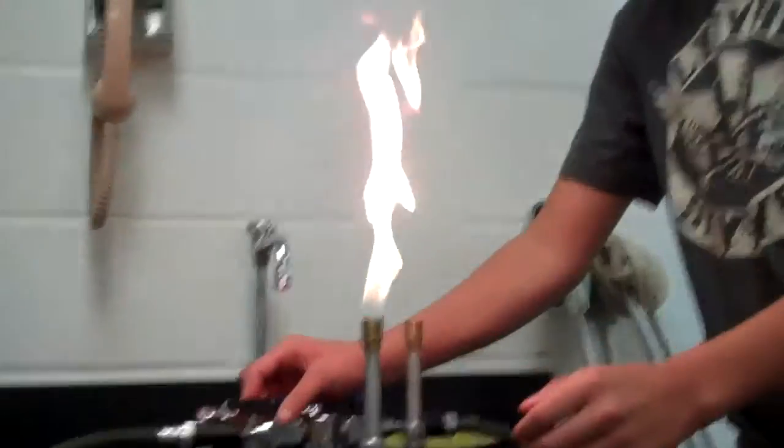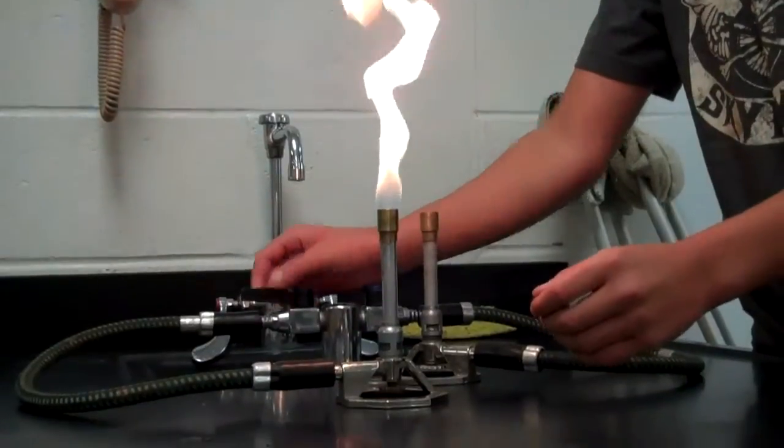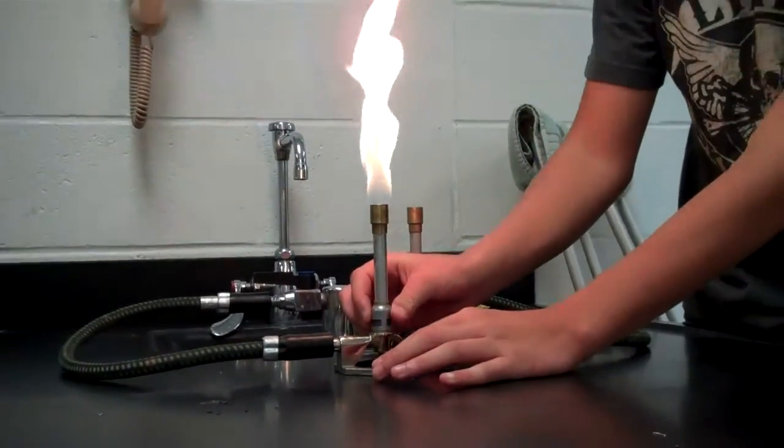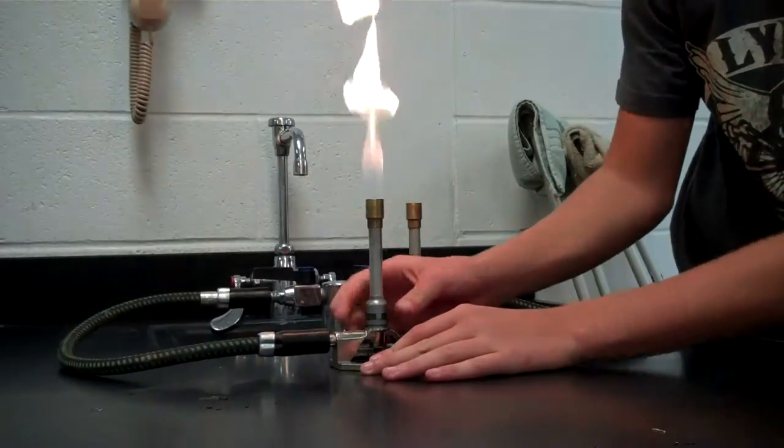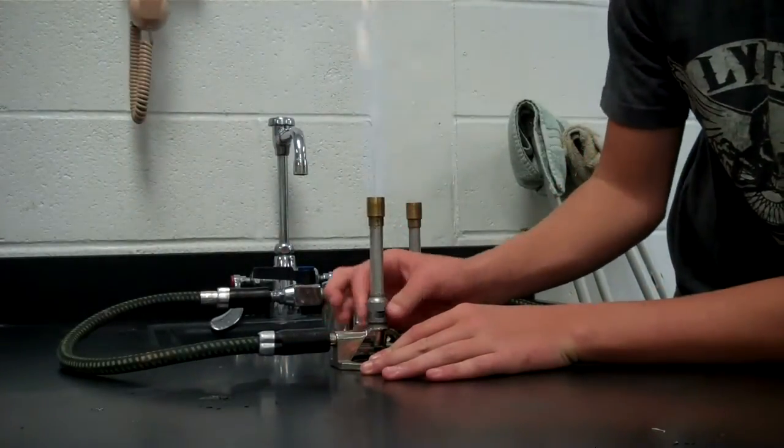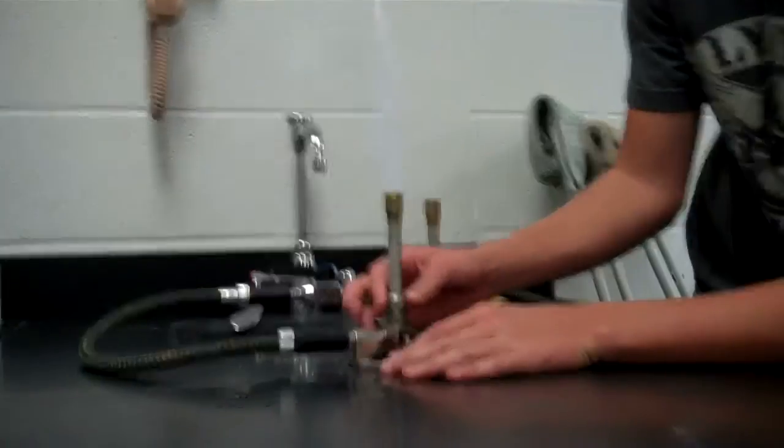You can play with the flame by making it smaller and bigger. The red flame doesn't have as much air to it. If you want more air to it, you unscrew it. When you unscrew it, it turns to a more decent flame. It's hotter.